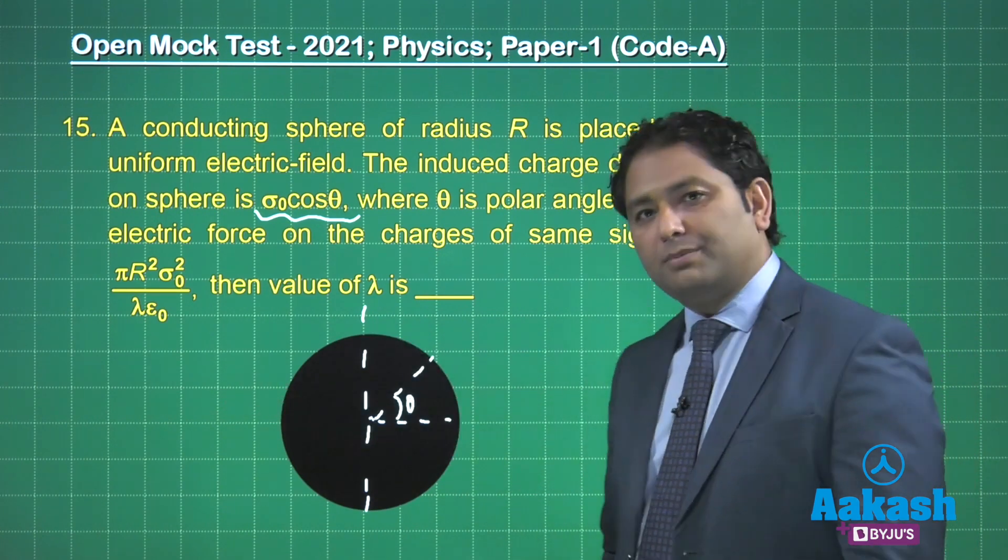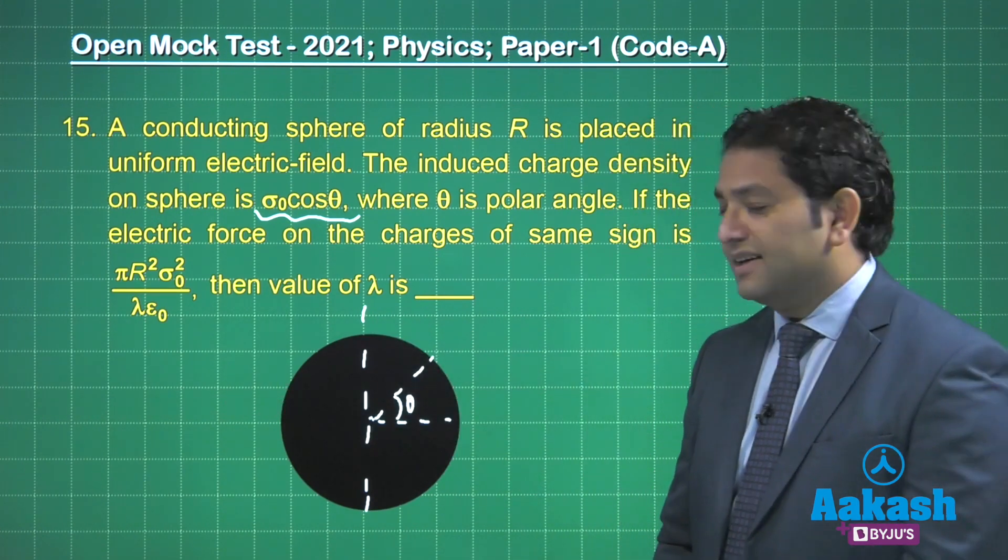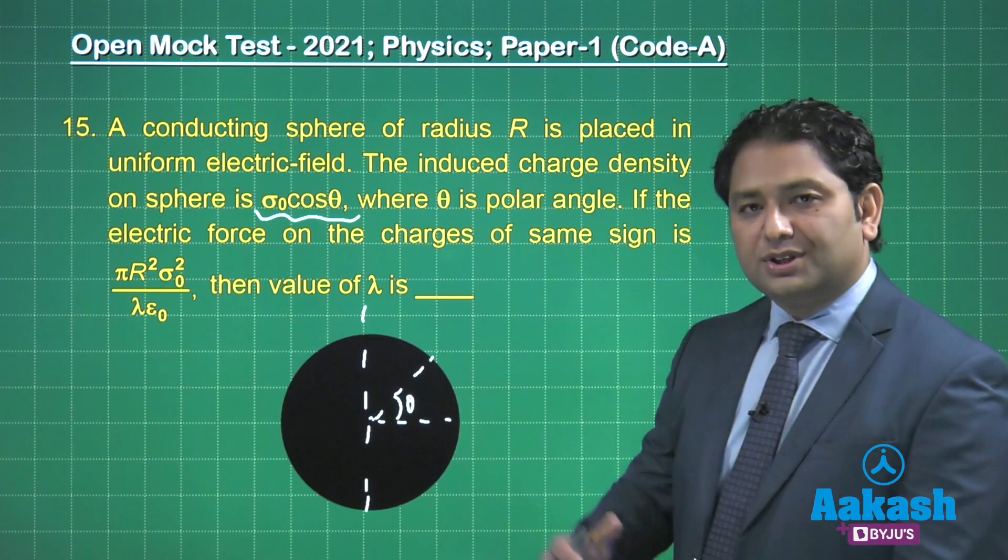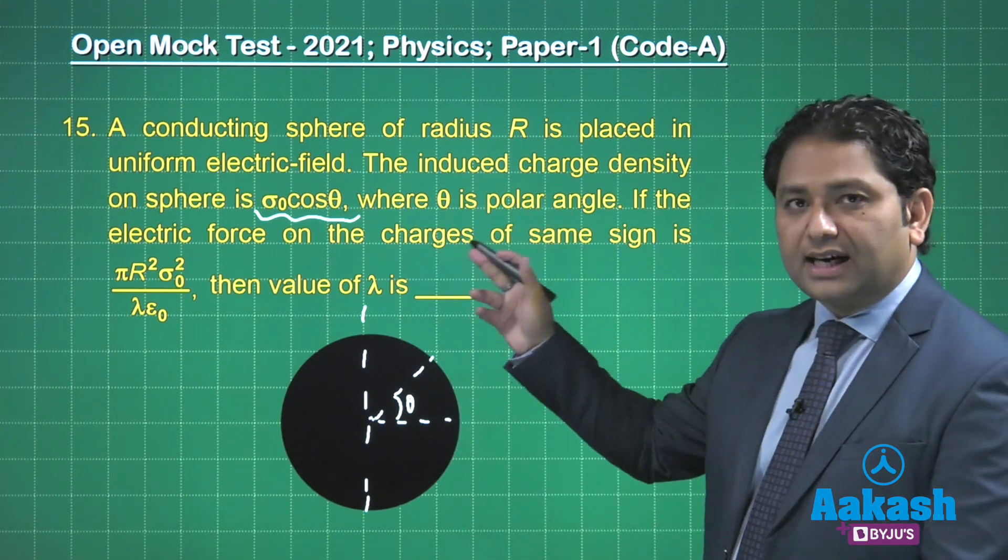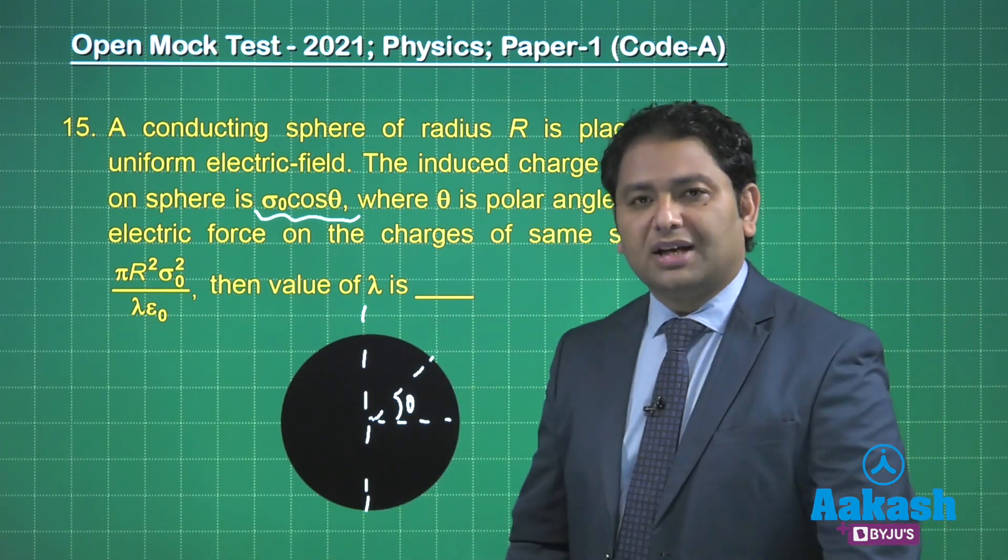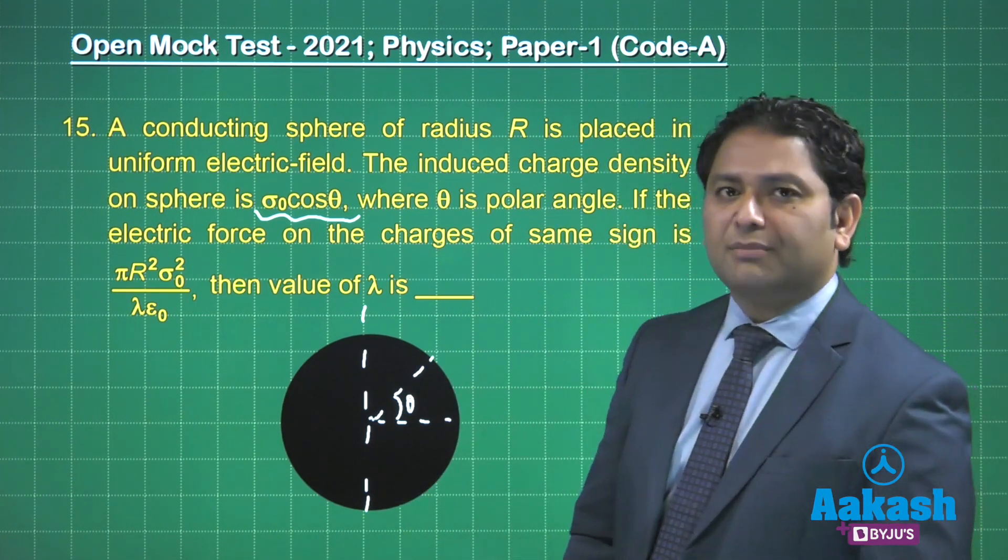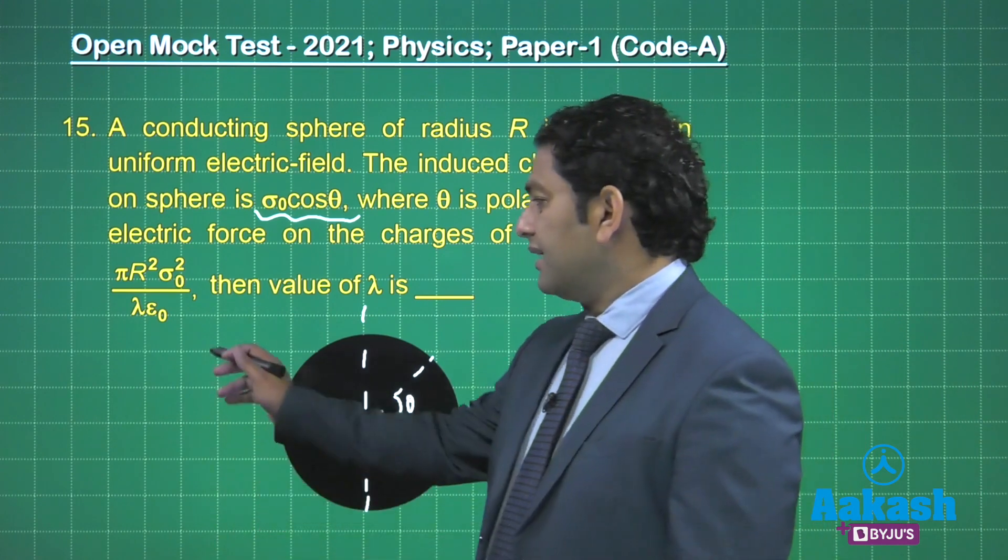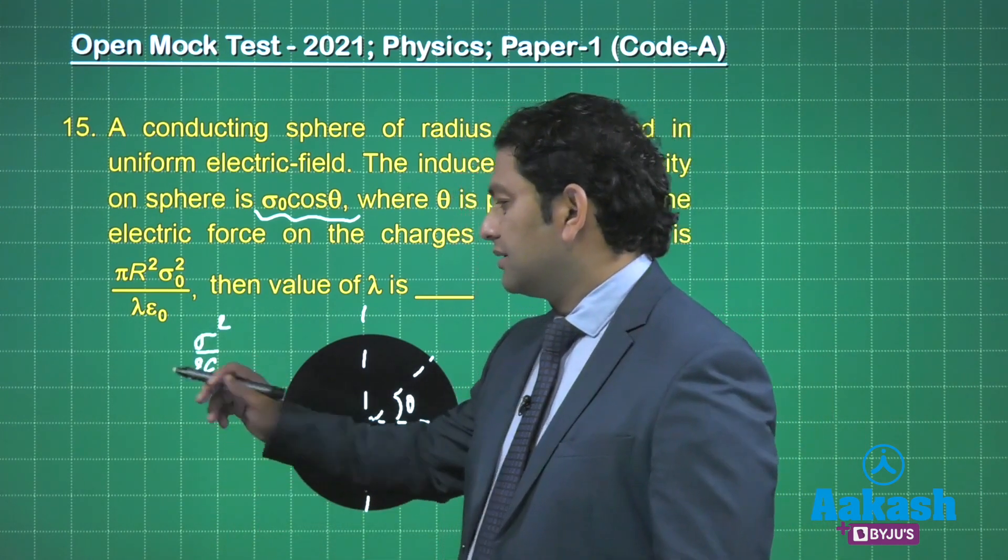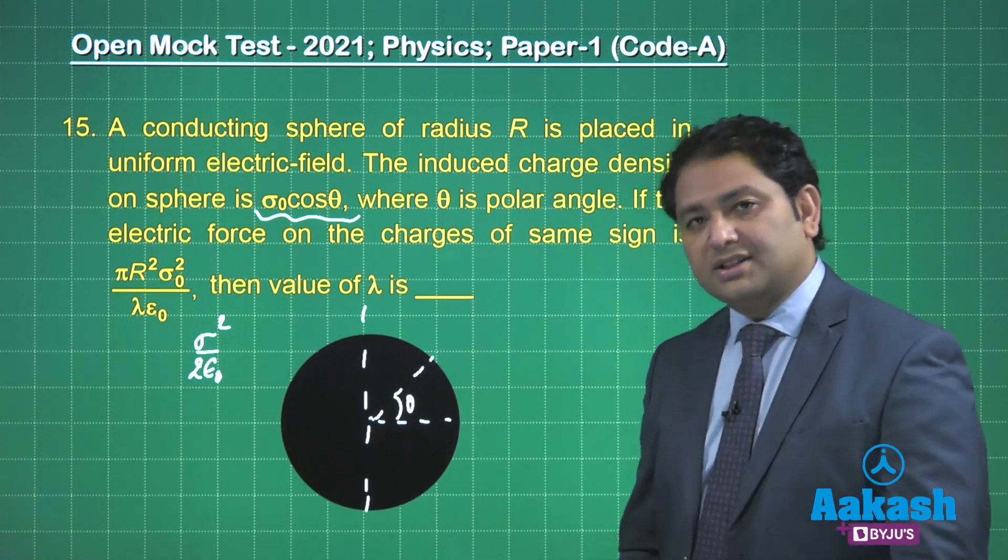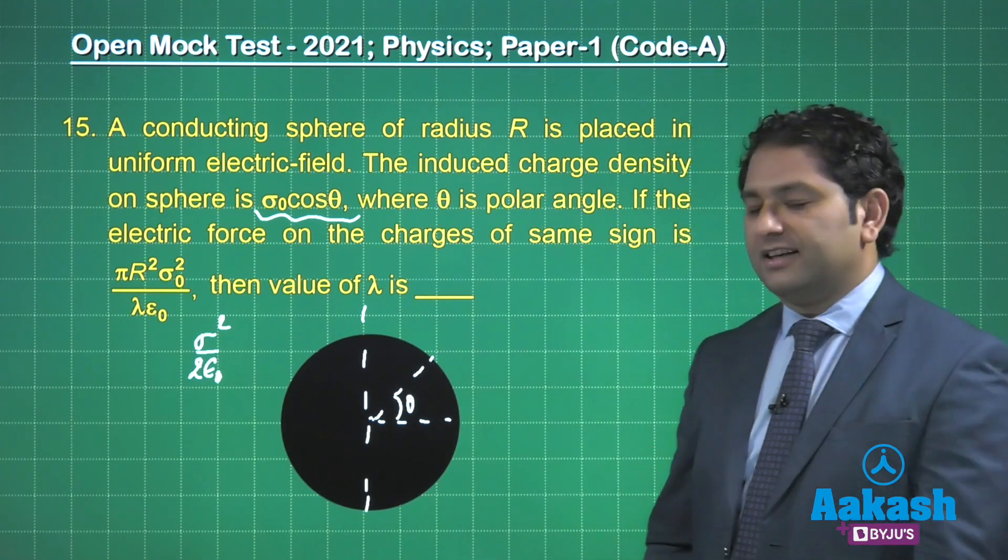The left hemisphere would be negative, and we need to calculate the force on the right hemisphere. Because this is a conductor, it's always recommended that you use the concept of electrostatic pressure, and that electrostatic pressure is σ²/2ε₀.